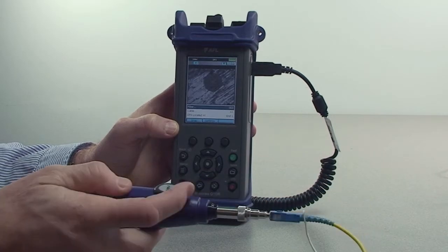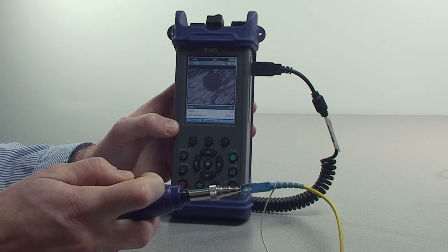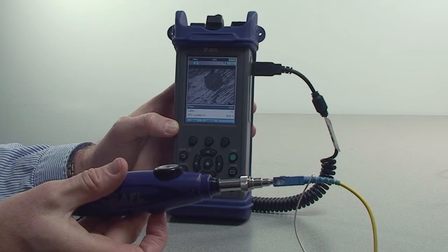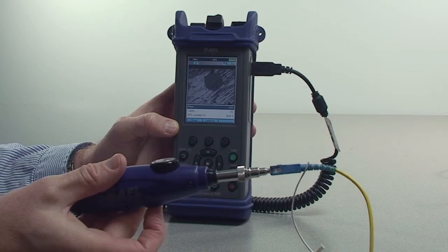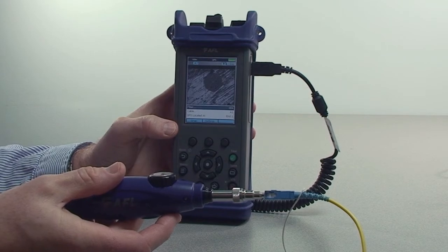Now you will be able to see the video from the scope being displayed on the screen. You simply focus it and save the image by depressing the save capture button on the bottom of the scope or the save button on the front panel of the OTDR.